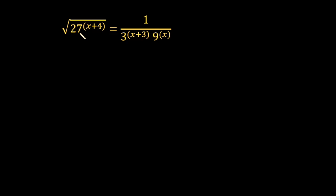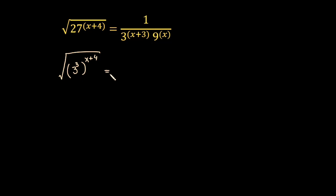27 can be written as 3 raised to the power 3, and 9 can be written as 3 raised to the power 2. So this equation can be further written as 3 raised to the power 3, raised to the power x plus 4, is equal to 1 over 3 raised to the power x plus 3, times 3 raised to the power 2, raised to the power x.